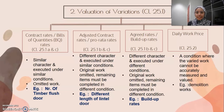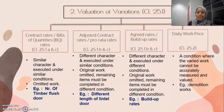Second, valuation of variation under Clause 25.1. First, contract rate or BQ rates under Clause 25.1A and C — similar character and executed under similar conditions, treated as omitted work. For example, a different number of timber flush doors. Second, adjusted contract rate under Clause 25.1B and C — different character and executed under similar conditions, where original work is omitted and remaining items must be completed under different conditions. For example, different length of lintel. Third, agreed rates — different character and executed under different conditions. For example, build-out rate.